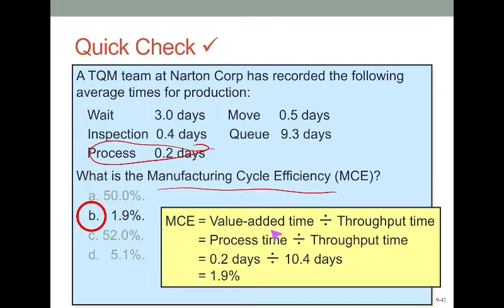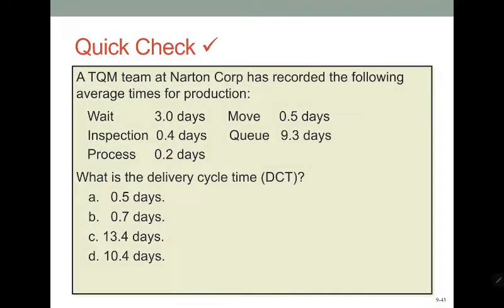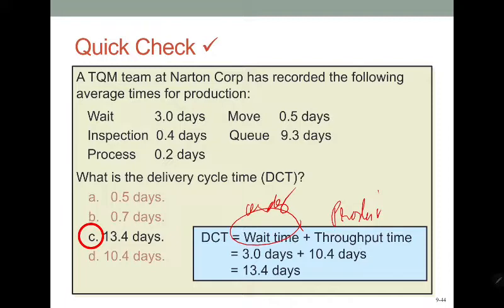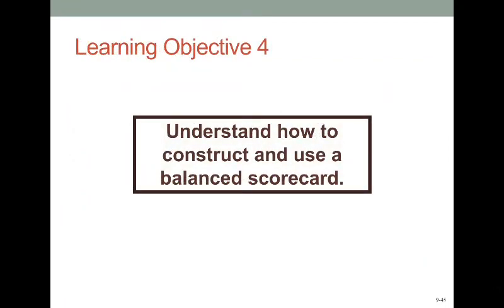Manufacturing cycle efficiency is the production time spent on value-added activities, using throughput time as the denominator — the total time spent in the production process. Delivery cycle time starts from ordering, so it includes the wait time between placing the order and receiving materials before production begins. The total delivery cycle time is 13.4 days.